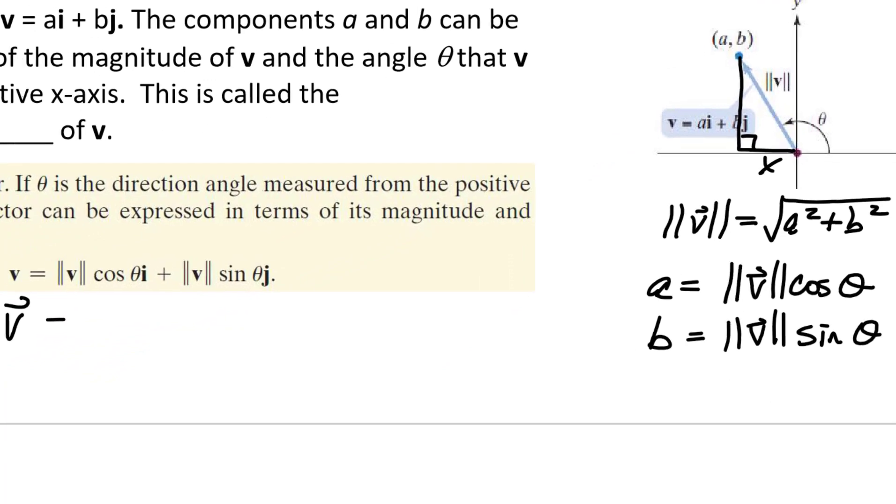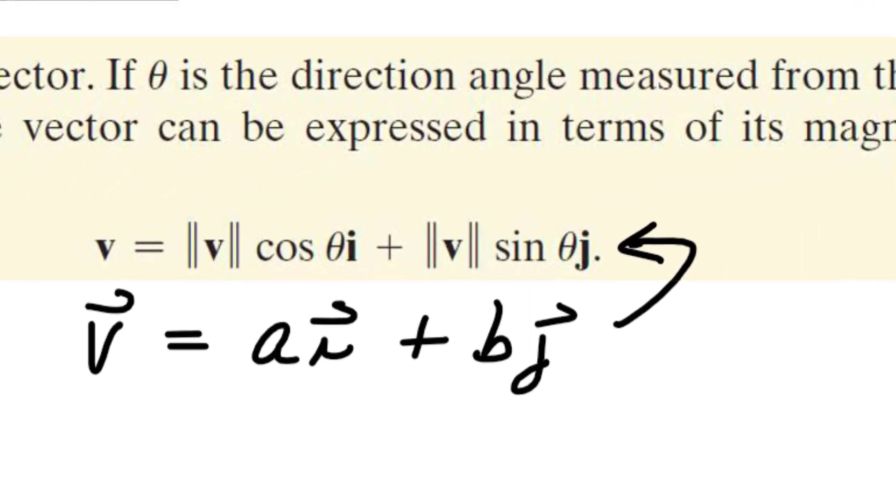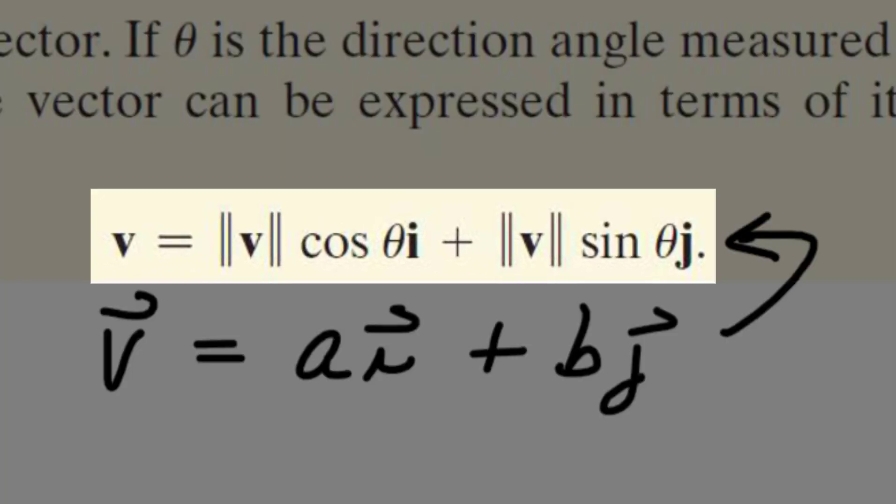So instead of writing the vector v as a i plus b j, we can write it as the norm or magnitude of v times the cosine of theta i plus the magnitude of v times the sine of theta j.